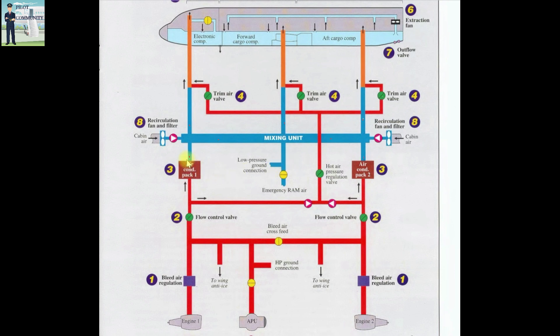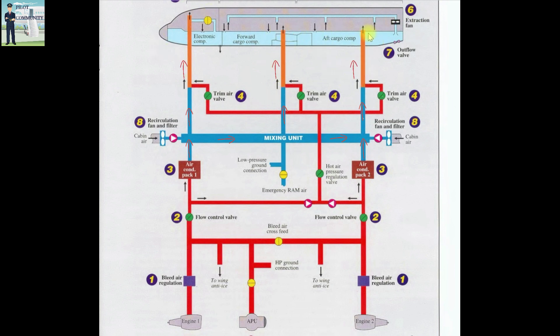The cold air coming out of the air conditioning pack enters the mixing unit, where it is mixed with recirculated cabin air. After that it is mixed with hot air via the trim air valves, which is the fine-tuning stage of temperature regulation. The primary temperature regulation is done by the air conditioning packs by modulating the ram air inlet flap and the turbine bypass valve. The final comfortable air then enters the three sections of the aircraft: the cockpit, forward cabin, and aft cabin.